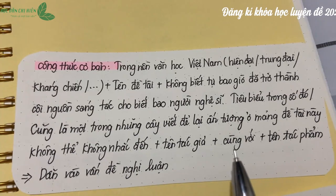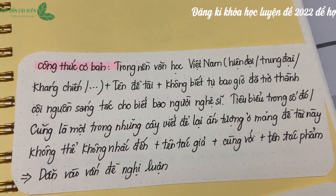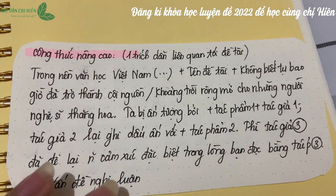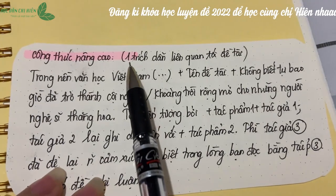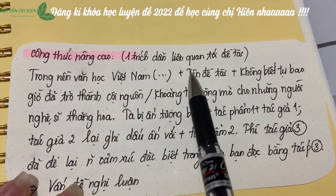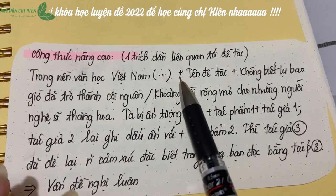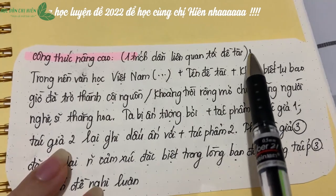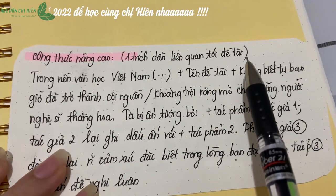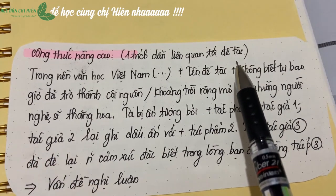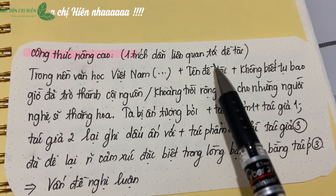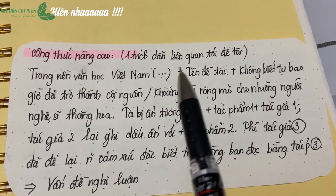Đây là công thức cơ bản. Ngoài công thức cơ bản này, nếu dẫn dắt từ đề tài, chúng mình cũng có thể tham khảo một công thức nâng cao hơn. Đối với công thức nâng cao, chúng mình có thể đưa ra một phần trích dẫn liên quan tới đề tài. Ví dụ về tác phẩm Người Lái Đò Sông Đà: 'Ai đó đã từng nói rằng, đất nước có nhiều dòng sông nhưng chỉ có một dòng sông để thương để nhớ, giống như cuộc đời của mỗi con người có nhiều cuộc tình nhưng chỉ có một cuộc tình để mãi mãi mang theo.' Hoặc trích từ trường ca Mặt Đường Khát Vọng của nhà thơ Nguyễn Khoa Điềm: 'Ôi những dòng sông bắt nước từ đâu, mà khi về đất nước mình thì bắt lên câu hát.' Sau đó chúng ta đưa phần tiếp theo vào.